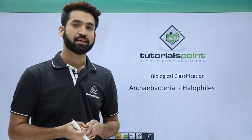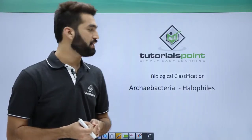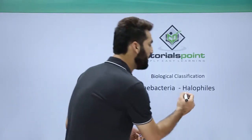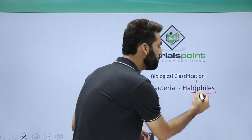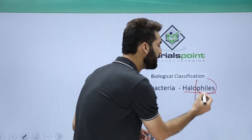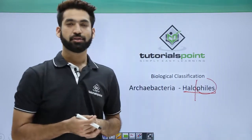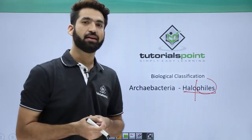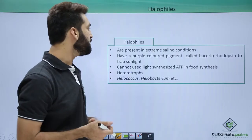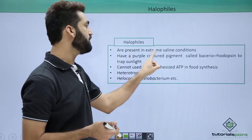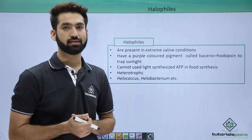In this session we'll be discussing the second group of archaebacteria, which is halophiles. As the name suggests, 'philes' means loving and 'halo' means saline. So such archaebacteria live in high salinity — they are present in extreme saline conditions.